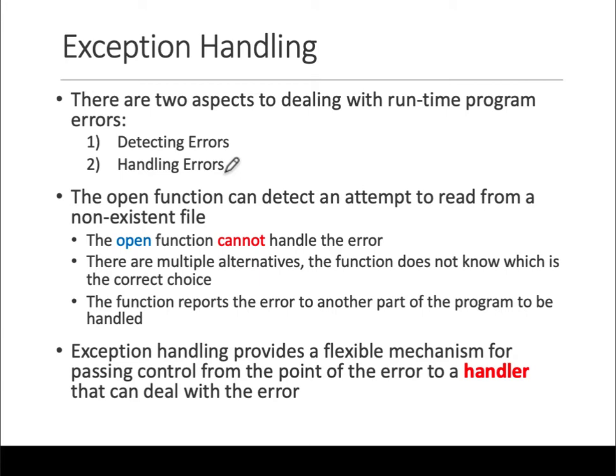In our filing example, when you open a file, that open function can detect an error but it cannot handle it. Let's say you try to open a file that does not exist—it knows there is an error, but it can't handle it.